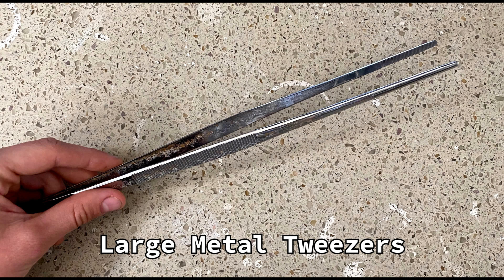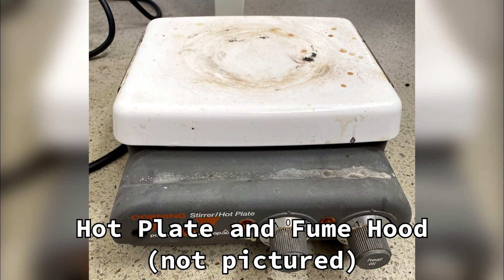You'll also need large metal tweezers for transferring cassettes between solutions, a hot plate for boiling solutions, and a fume hood to prepare these boiling solutions under.